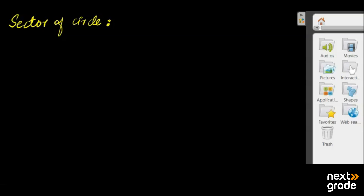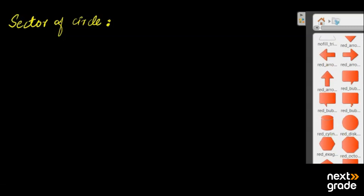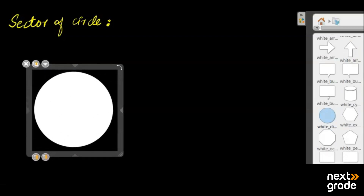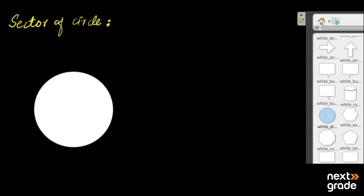First of all, we need to draw a circle, because we will draw all the information from the circle. Now, if you define elements in this circle — the center is here, we will mark this point. Consider two points on the circumference and draw radial segments. We are taking radial segments here.